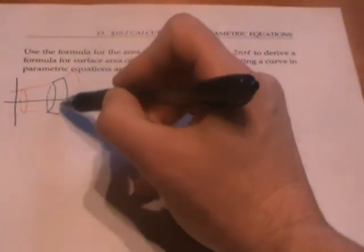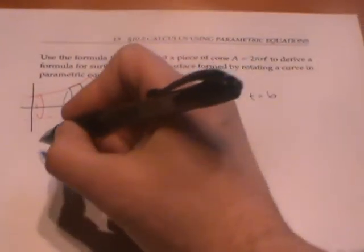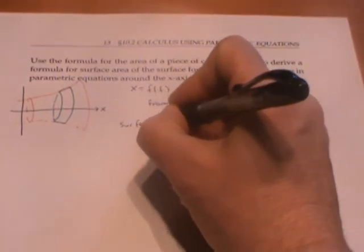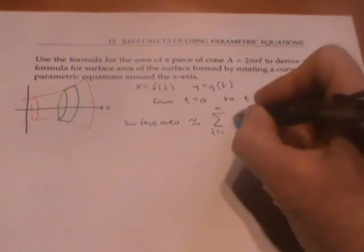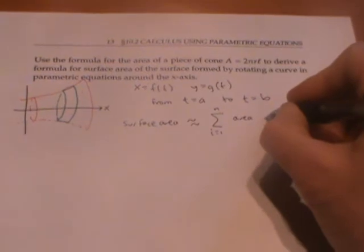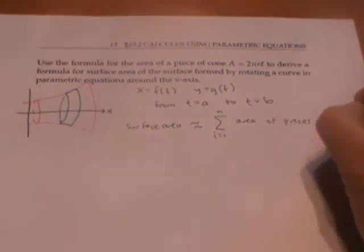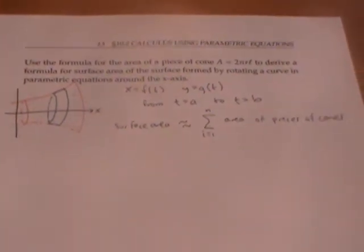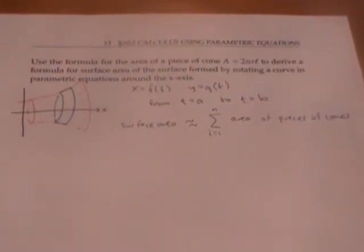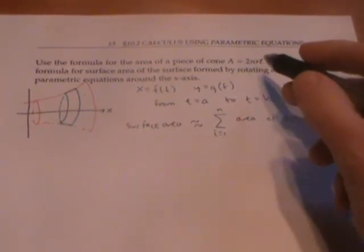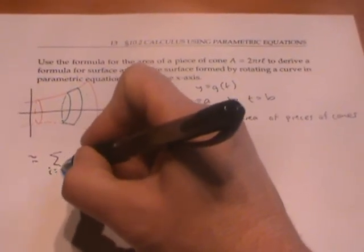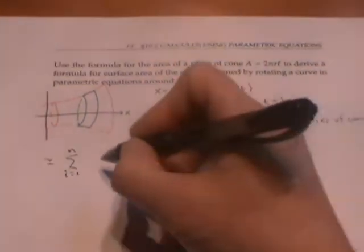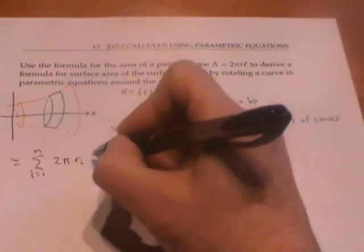By approximating small pieces of my surface with small pieces of cones, I can see that the surface area is approximately the sum of the areas of these pieces of cones, where I'm assuming I have n small pieces of cones in my approximation. Using the formula we just mentioned, we can rewrite this as the sum from i equals 1 to n of 2πr_i l_i.